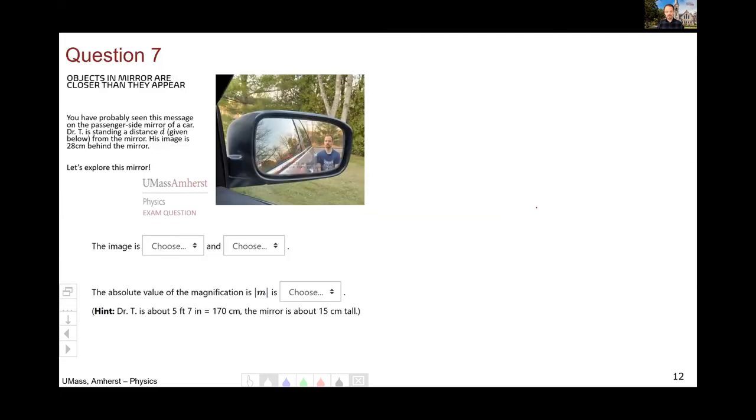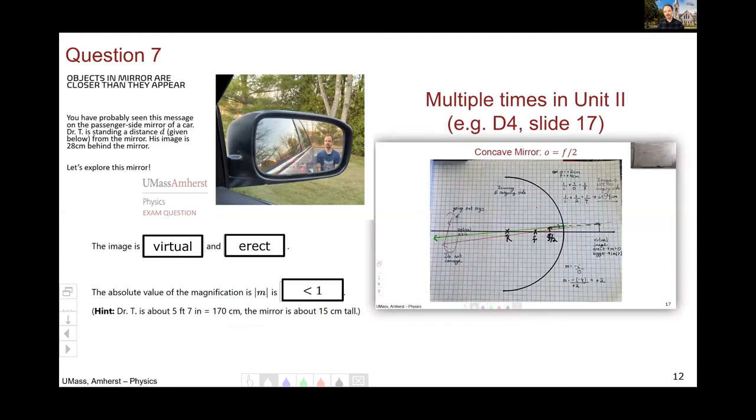Question seven was a follow up to this intentionally structured so that you didn't have to get six to get seven. The image is obviously virtual. It's behind the mirror. The light does not go behind the mirror, so that can't possibly be real. It is erect. I'm not standing on my head. And the magnification is less than one because the mirror is only 15 centimeters tall. And while I might be short, I'm not that short. Multiple times, this categorization of images was done repeatedly throughout unit two. A good example here is the concave mirror with an object inside the focal length. Very similar to what we see here. We have a virtual erect image behind the mirror, just like we do here.